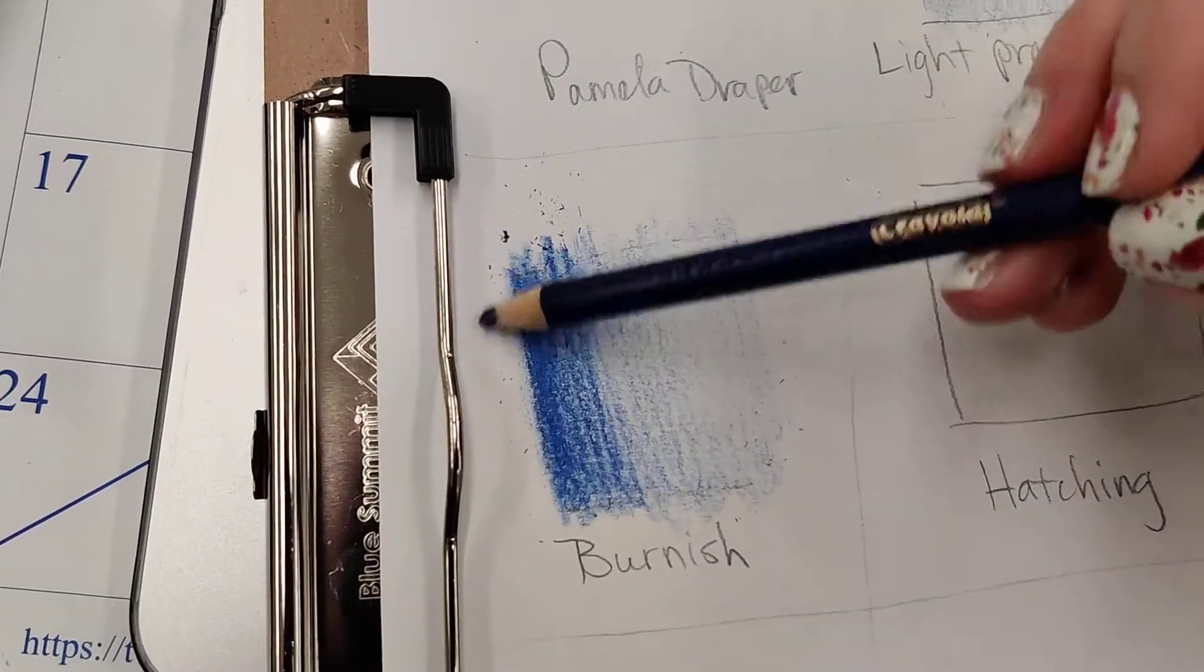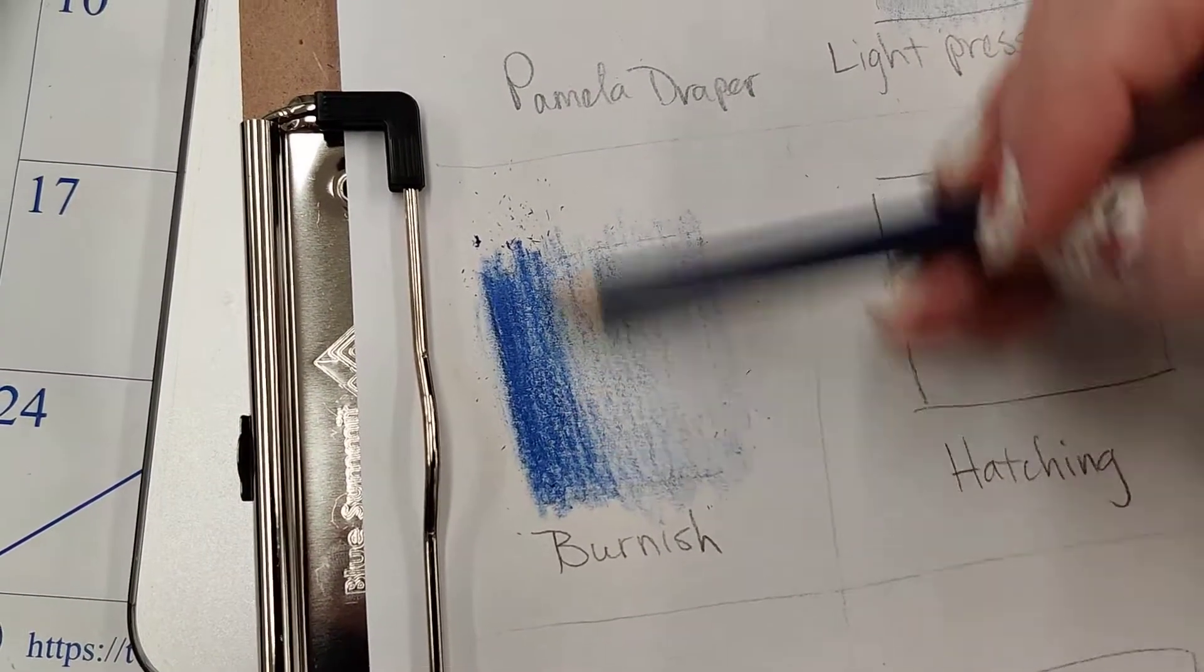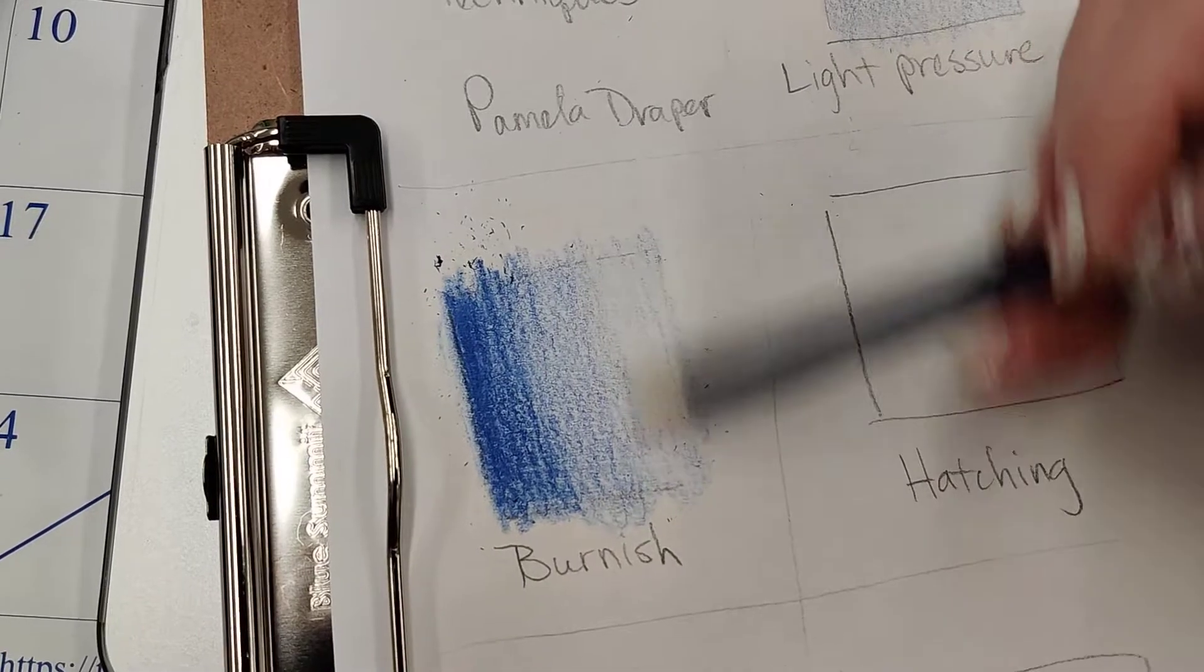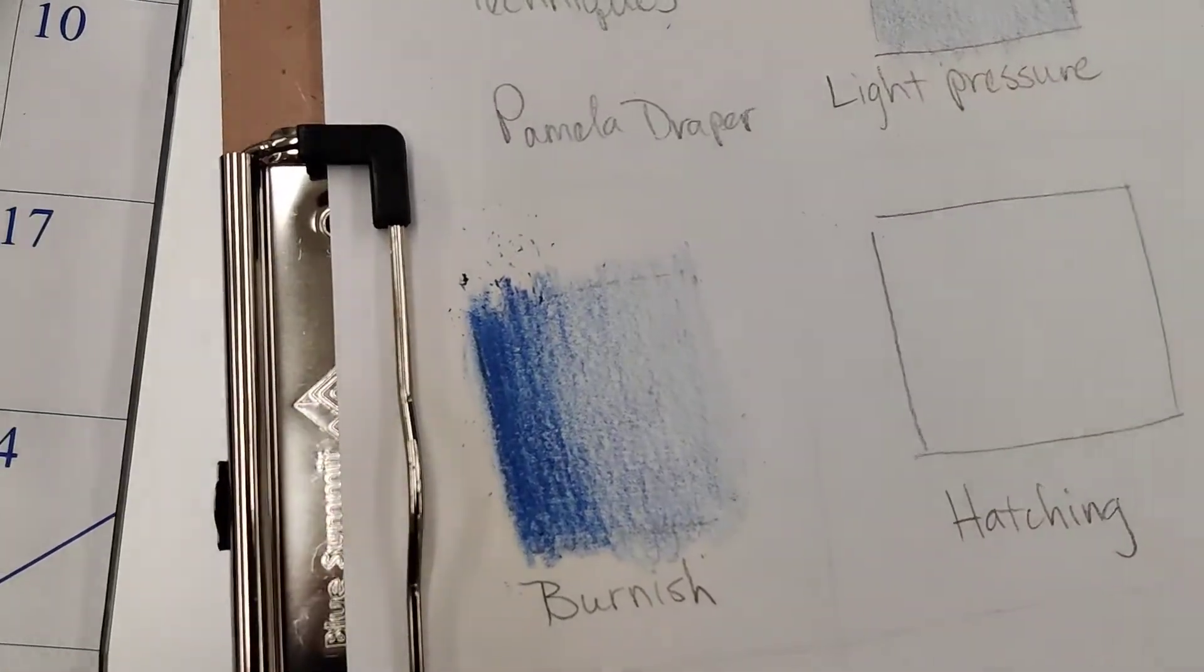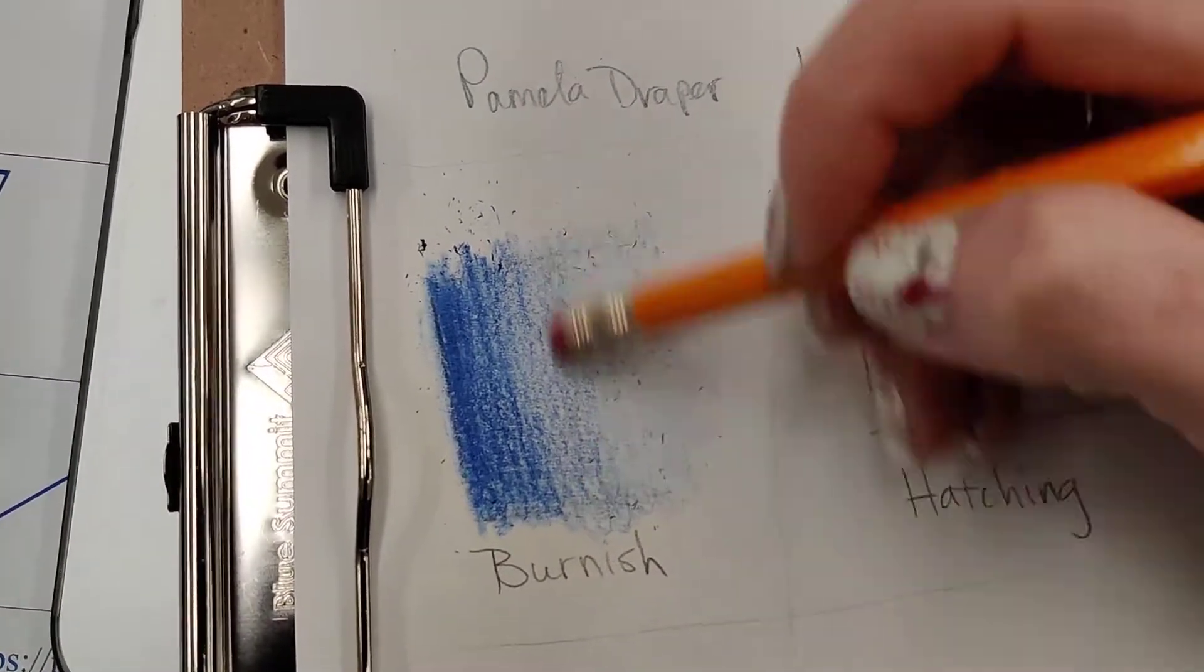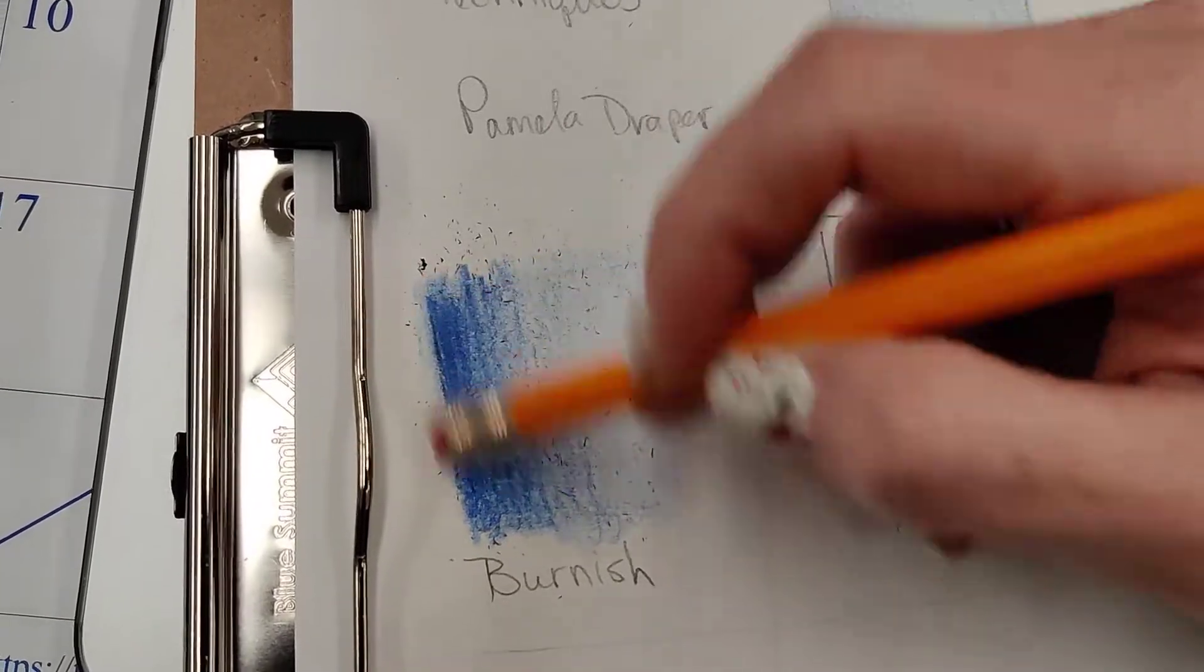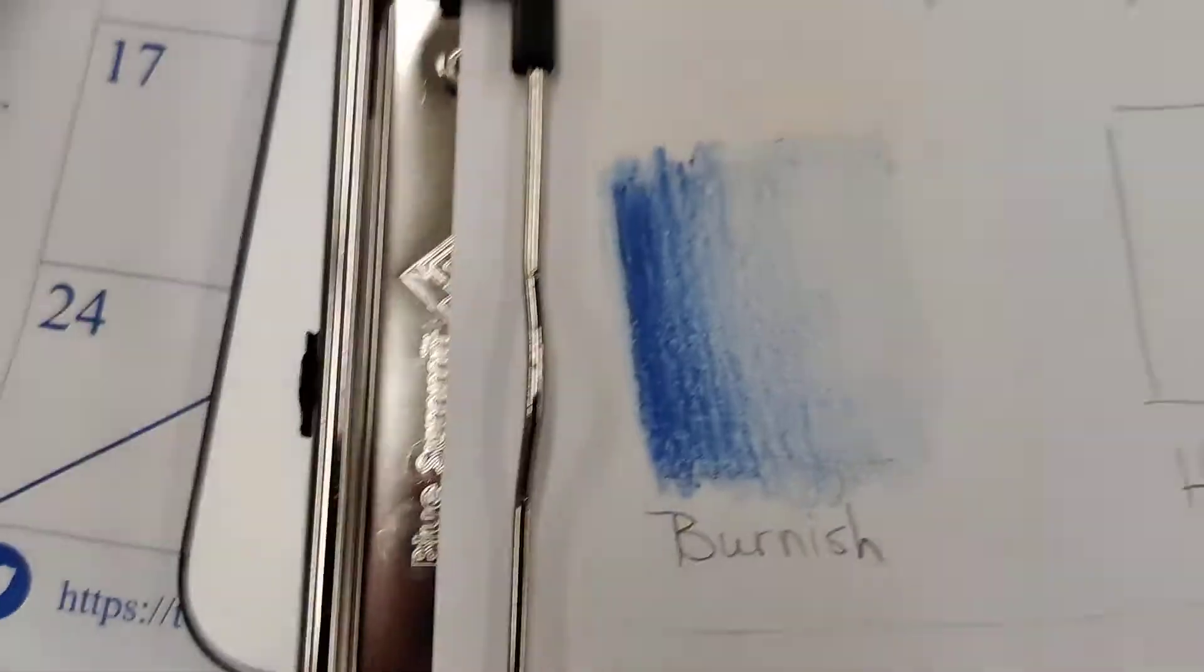you may want to pick up a colorless blender. Prismacolor makes one. The best one is made by a company called Caran d'Ache. They are Swedish, but I don't know if they sell them at regular, like Michaels. You might have to go online to find that these days. You can always, if you feel like that lightened your gradation up too much, you can just do what I just did and go back over with another light layer and blend it in. So this is something you can play with. So it smooths out some of your pencil work. All right. Burnish.